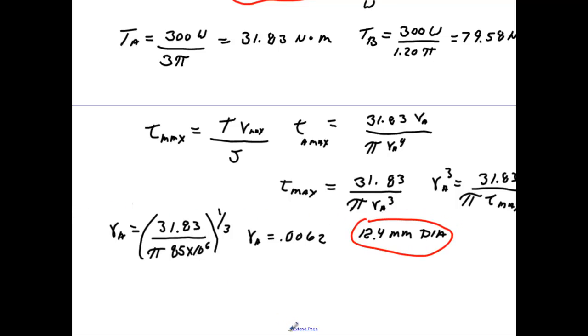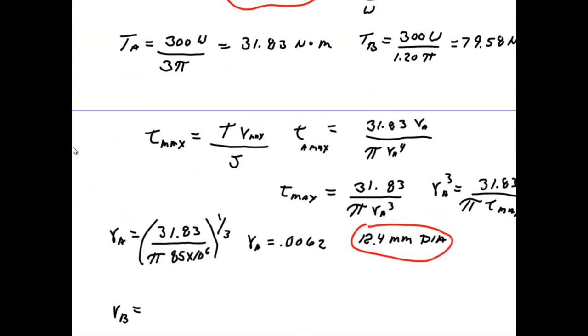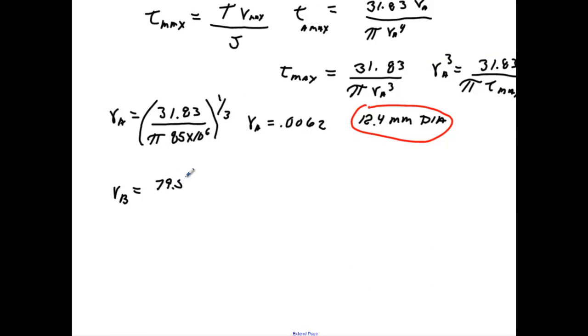And then really all we have to do is do basically the same thing for B. So R_B, basically it's the same equation, we'll just change our 31.83 to 79.58, 85 times 10 to the 6th. Take all that to the 1 third power. And the radius at B would be 0.008415, which converts to 16.8 millimeters diameter.